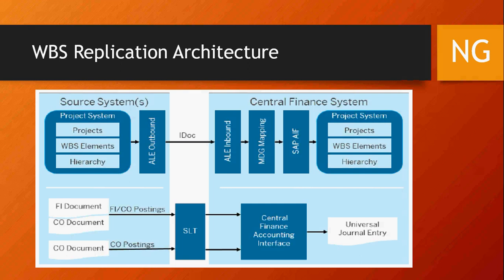Looking at the architecture, on the top you see two blocks: the replication of projects, WBS, and the hierarchy — this happens through IDocs. At the bottom, the normal accounting document replication where WBS is being used is replicated through SLT, which is the standard Central Finance functionality. So there are two sets to configure: the IDoc functionality for sending WBS from source to central system, and then the bottom SLT functionality works in the standard way. This is a new functionality added for customers where project reporting in the central system is a key requirement.